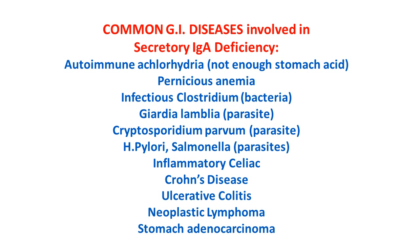SIgA becomes suppressed by an elevated cortisol to DHEA ratio, and becomes elevated during acute conditions like pathogens or infections. Common gastrointestinal diseases associated with SIgA deficiencies include: autoimmune achlorhydria (insufficient stomach acid), pernicious anemia, infectious clostridium (a bacteria), Giardia lamblia (a parasite), Cryptosporidium parvum (a parasite), H. pylori, salmonella, other parasites, inflammatory celiac, Crohn's disease, ulcerated colitis, neoplastic lymphoma, and stomach adenocarcinoma.